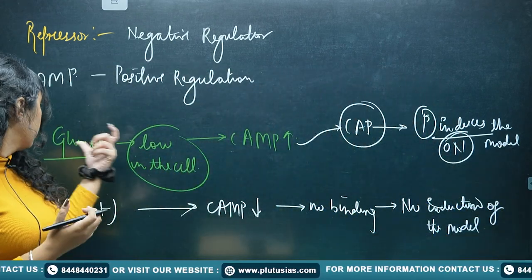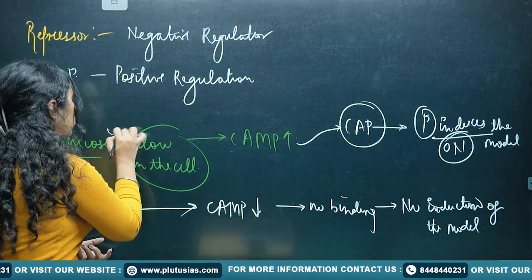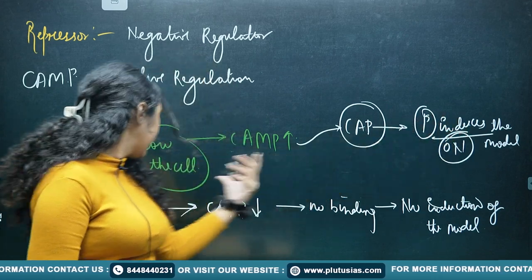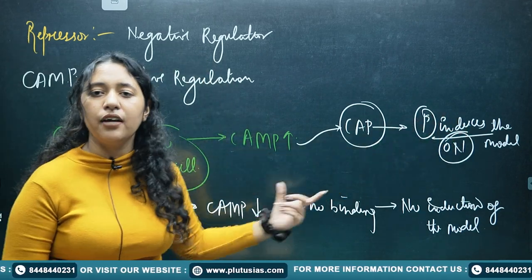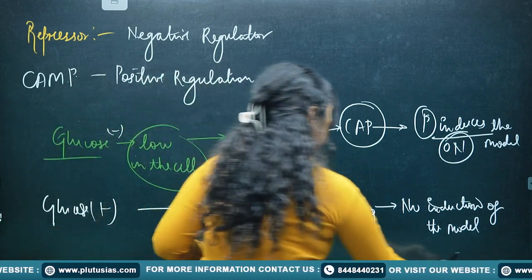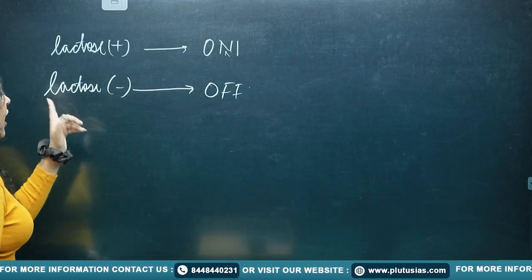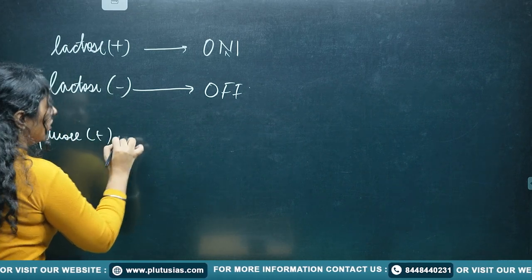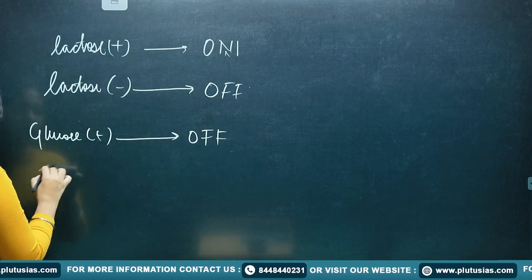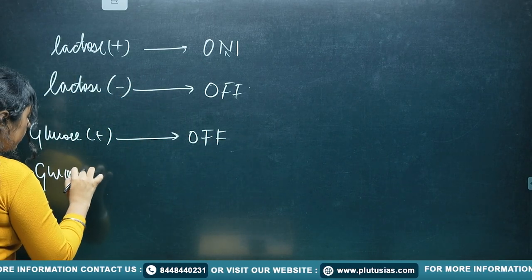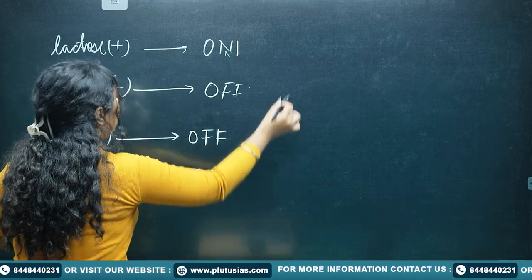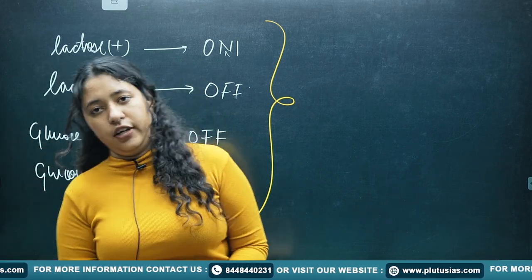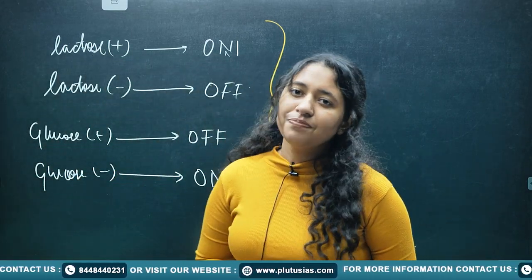To sum up: glucose less means CAMP high, cAMP induces the model. Glucose more means cAMP less, no binding, no induction. Lactose present — model is on; lactose absent — model is off. Glucose present — model is off; glucose absent — model is on. This is the complete regulation of the operon model. Thank you so much.